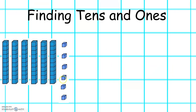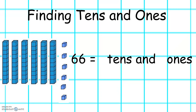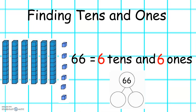Let's look at this number: 10, 20, 30, 40, 50, 60, 61, 62, 63, 64, 65, 66. 66 has how many tens and how many ones? Let's count. 66 has 6 tens and 6 ones. On our number line diagram, 66 would look like 60 and 6.